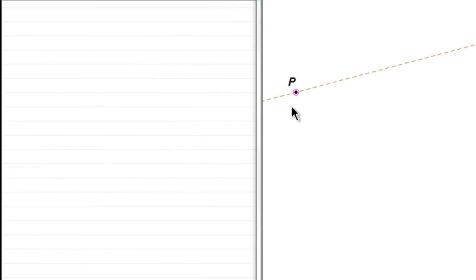Hi. Now suppose we have a particle P moving along a straight line. In this video what I want to do is show you how we can find the position vector of P after any time t.